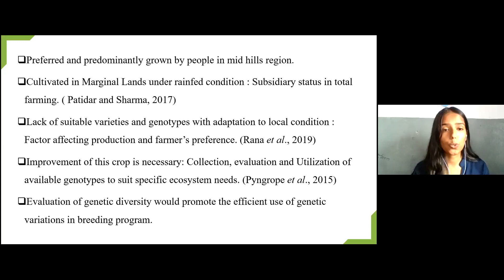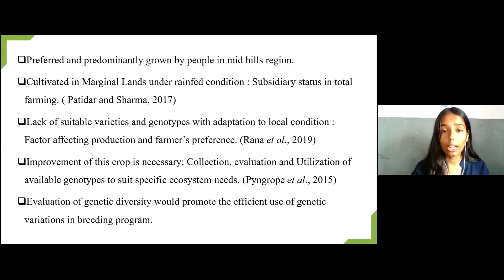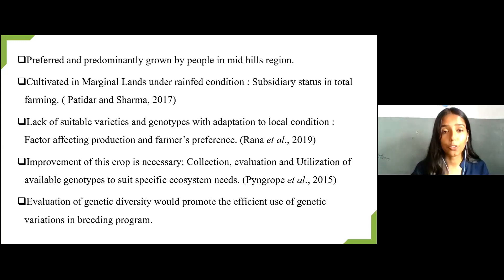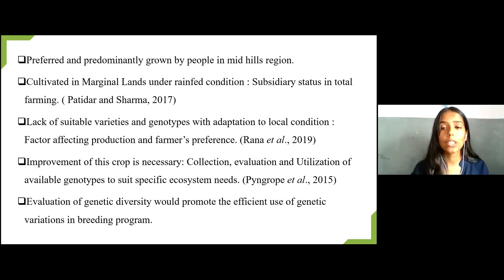A major constraint affecting production stability and farmers' preference for Black Gram is the lack of suitable varieties and genotypes adapted to local conditions. Research on this species has lagged behind that of cereals and other legumes. Therefore, there is a great need for improvement of this crop through evaluation and utilization of available genotypes.